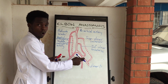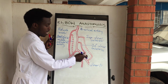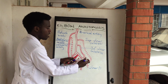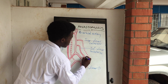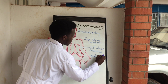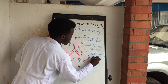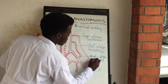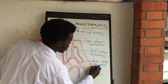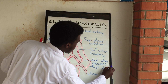The first branch from the ulnar artery is going to be the anterior ulnar recurrent artery. Then the next branch is going to be the posterior ulnar recurrent artery.